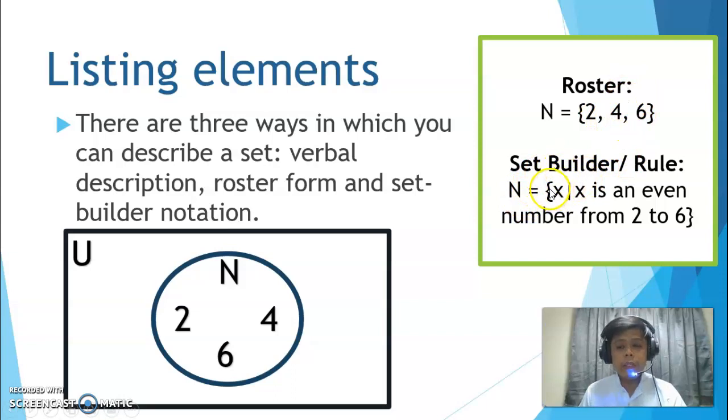When using set-builder or rule, we have set N, its name, and then equals, open brace. And then we use this notation. We read this as: set of all x such that x is an even number from 2 to 6, and then close brace. When you use set-builder, you set a rule, or rules for membership. So 2, 4, and 6 are even numbers, right? So it should be more specific, more defined. Where did our even number start? From 2, and then it ended at 6. When you say 2 to 6, the only possible even numbers are 2, 4, and 6. So our rule is well-defined. Only those three elements can be members of set N.